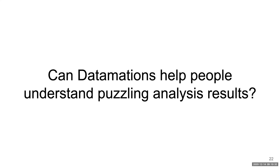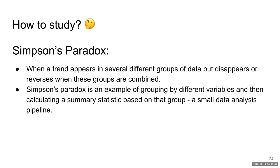The first research question that we wanted to answer as an exercise in testing the effectiveness of datamations in the wild was whether datamations can help people understand puzzling analysis results. We settled on a well studied statistical phenomenon called Simpson's paradox. Simpson's paradox occurs when a trend appears in several groups of data, but disappears or reverses when these groups are combined. In this way, Simpson's paradox can be illustrated by a small data analysis pipeline, for example by calculating the same summary statistic after grouping data points according to different criteria.